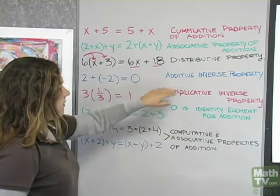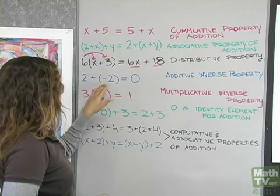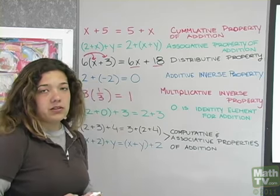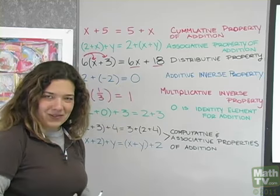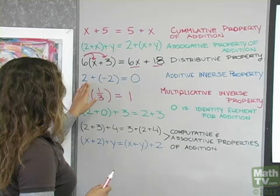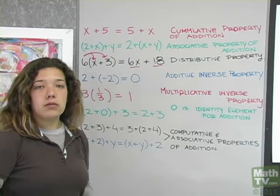We have the additive inverse property which is 2 plus negative 2 equals 0. You add the inverse of any number, you get 0. So this could be negative 2 plus 2 equals 0.